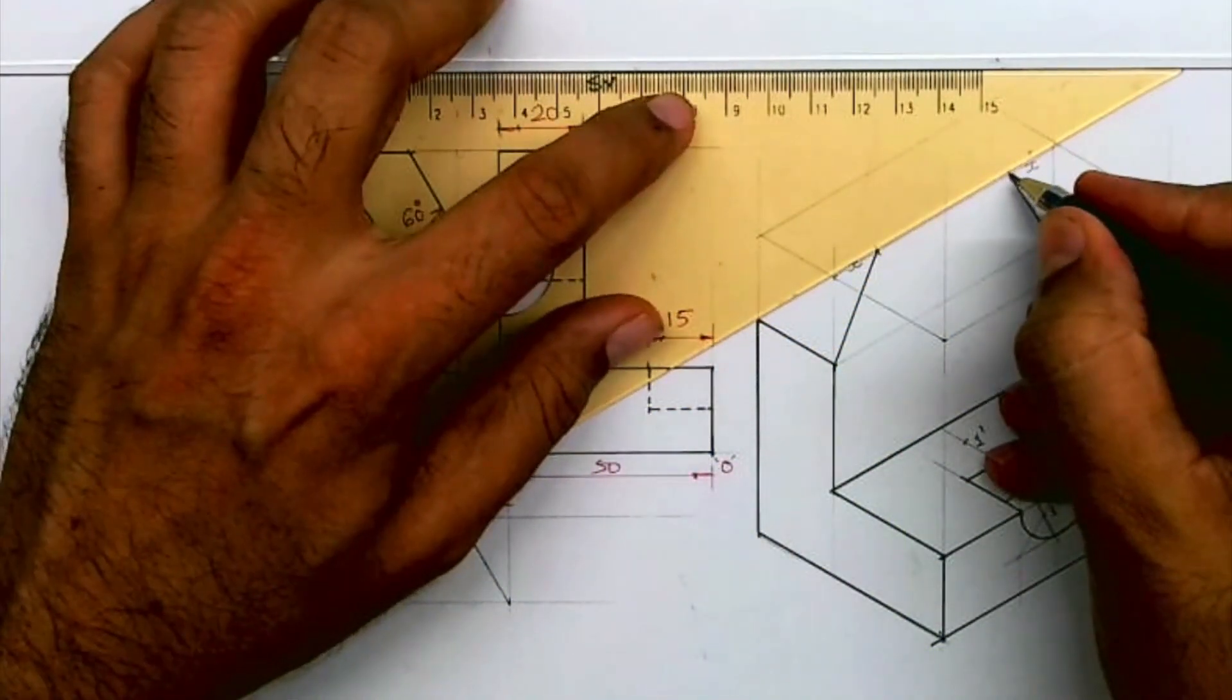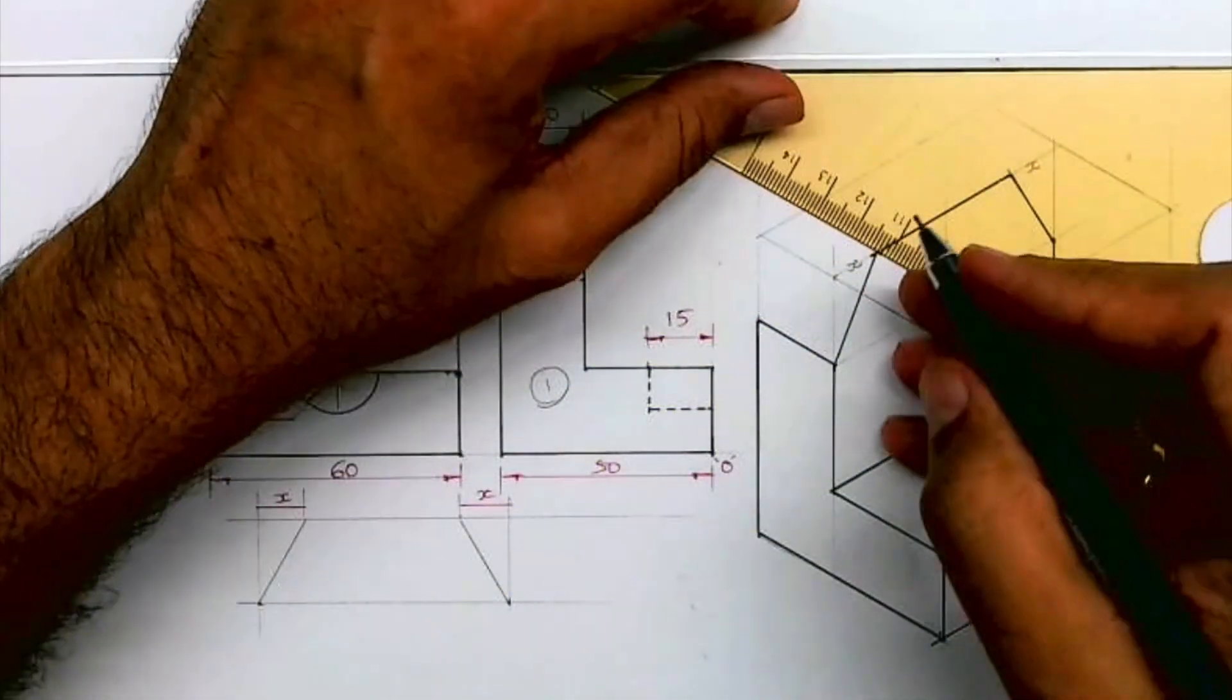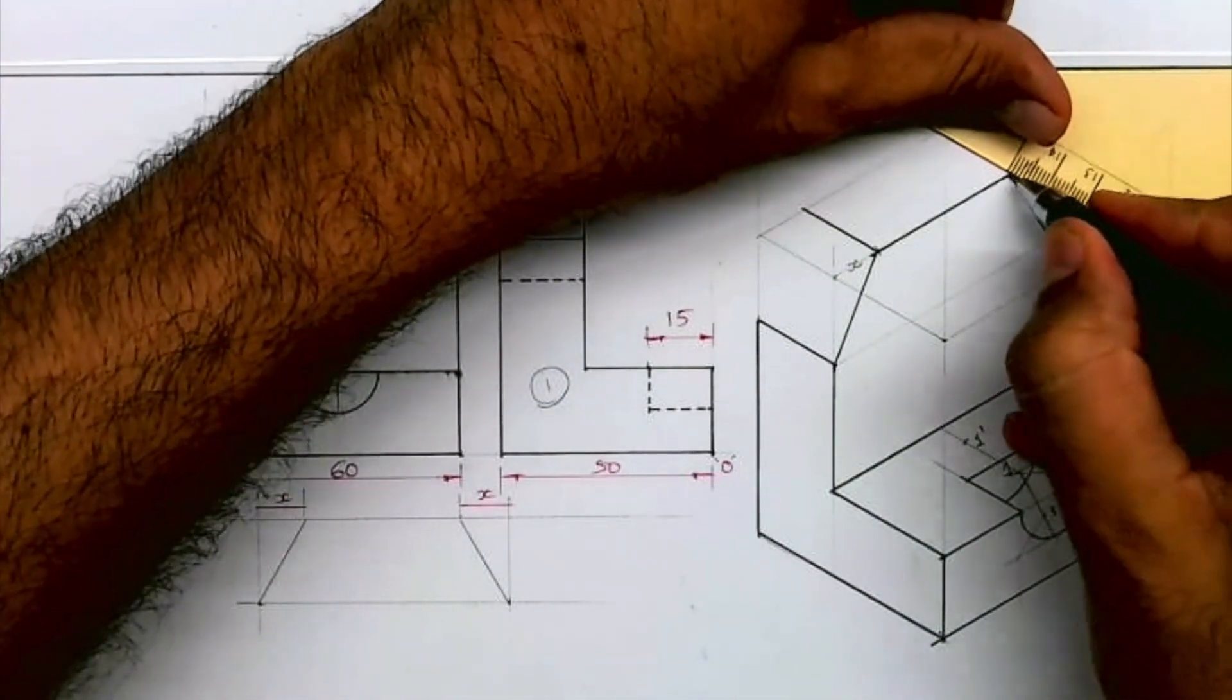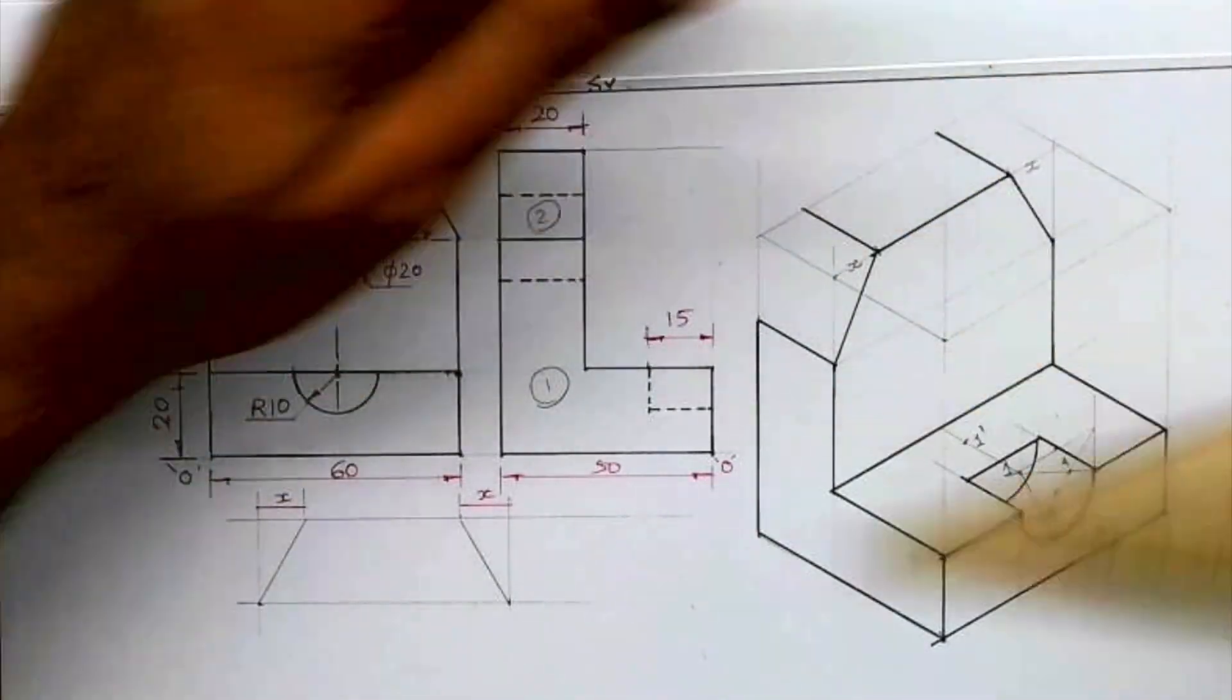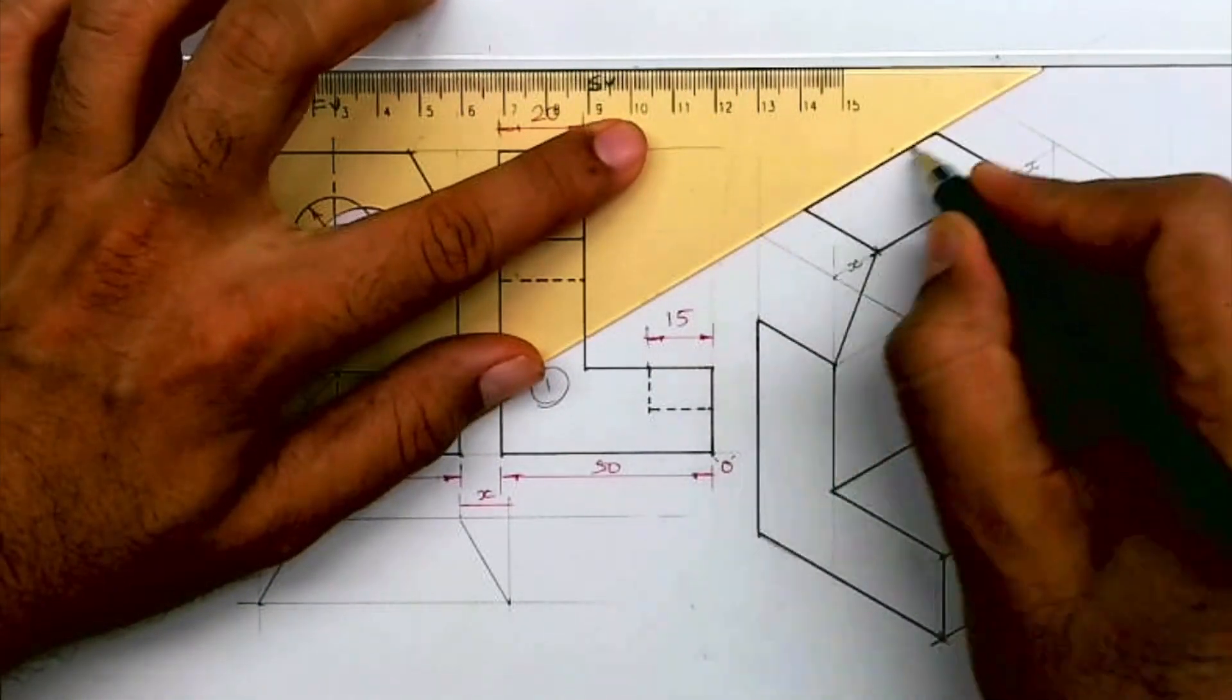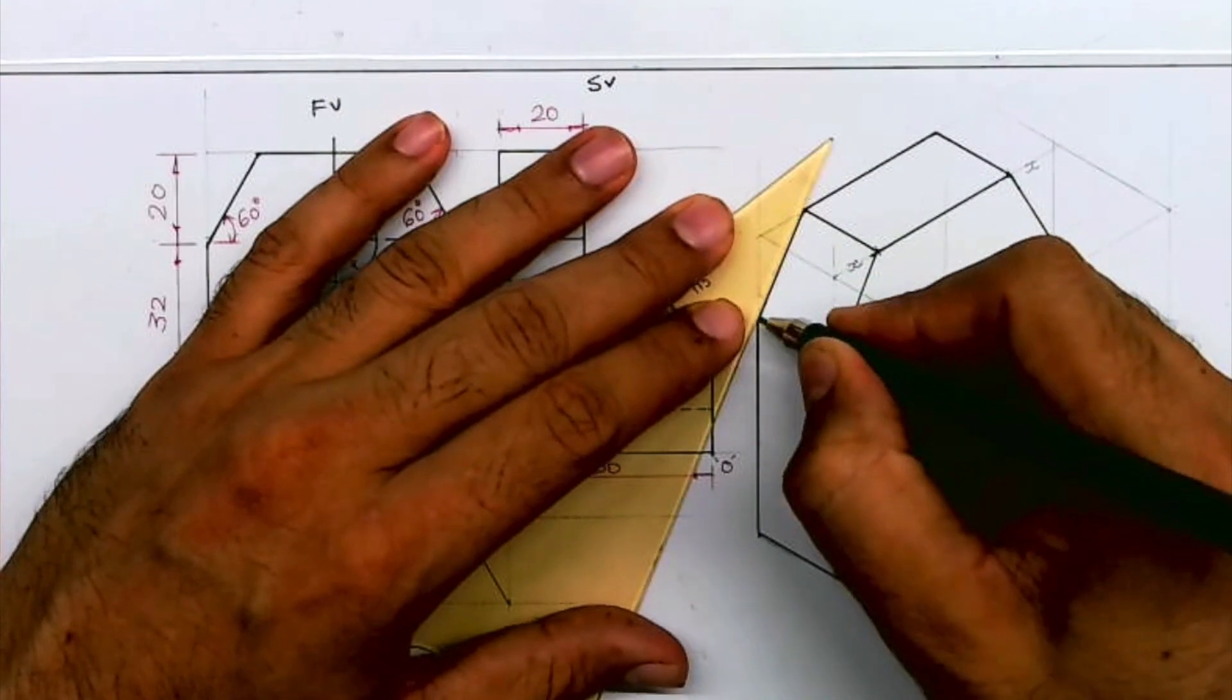After that, this line is dark. Then you take this behind. This one. This will be dark. And this way now we need to draw only circle.